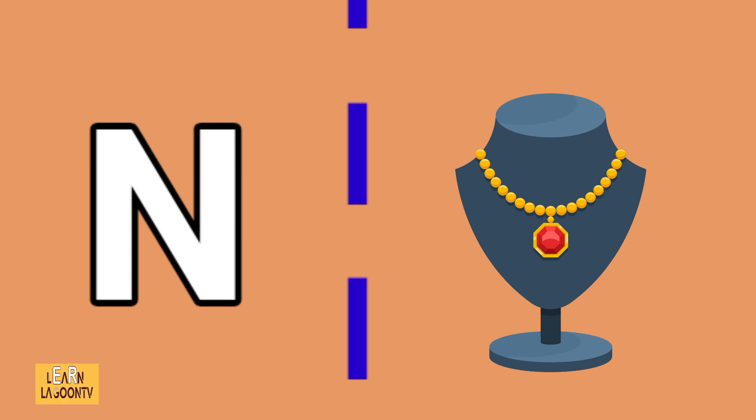N is for necklace, O is for orange, P is for parrot.